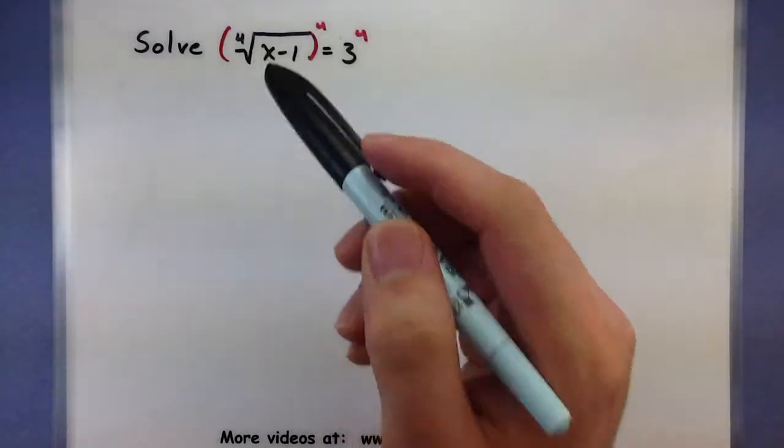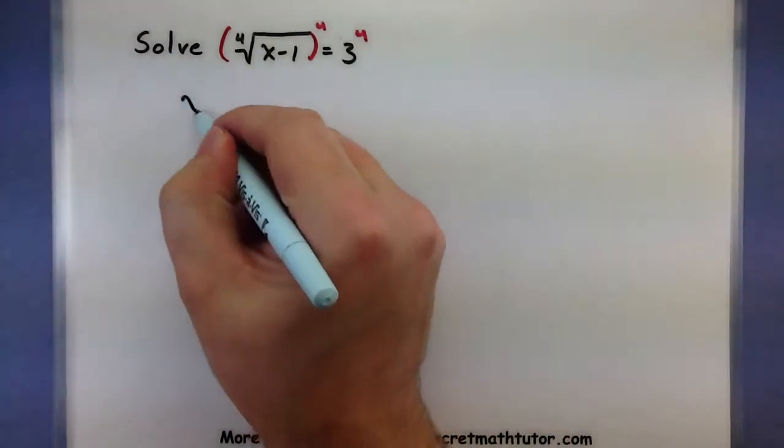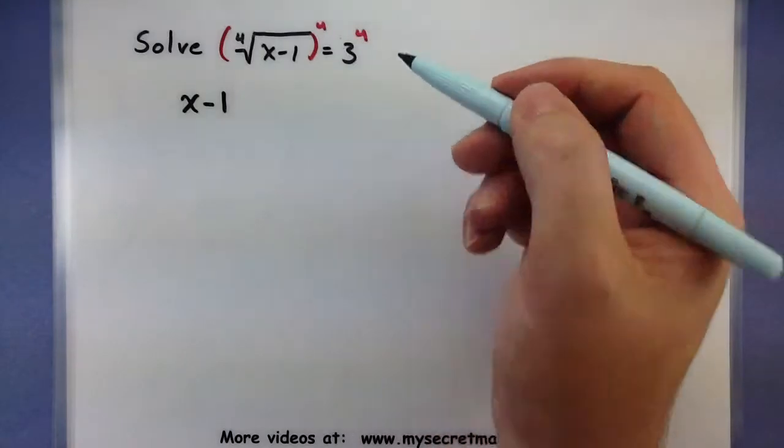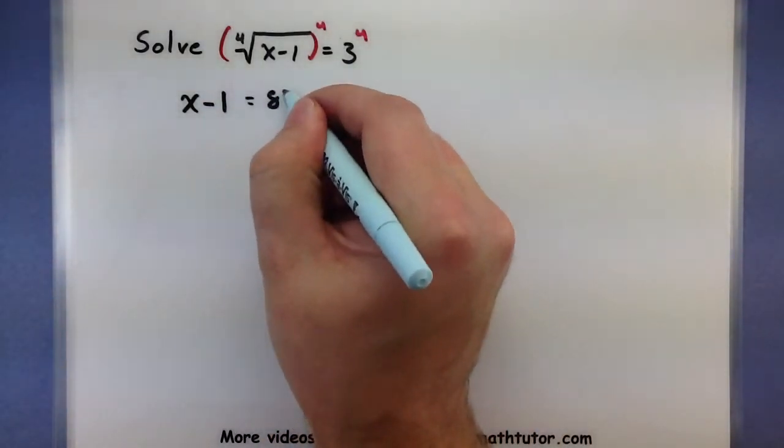The fourth power and the fourth root will end up killing each other off. So x minus 1. Over here, 3 to the fourth, this will give me an 81.